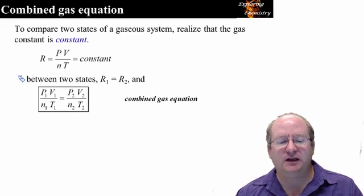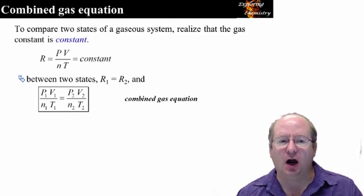To derive the Combined Gas Equation, we need to realize that the gas constant R is a constant. So we have the equation that R is equal to PV over nT.